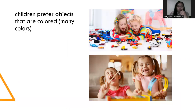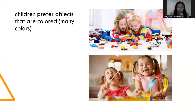How about children? We can observe that children prefer objects that are colored with many colors. Very young children really like red, yellow, blue, and orange. They very much like many colors in their life.